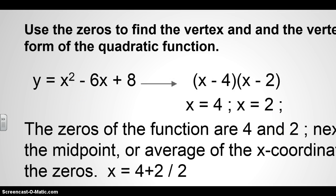So, here we have an example. They want us to use the zeros to find the vertex and the vertex form of the quadratic function. Remember the vertex form was on the previous slide, and that was in the form of y equals a parenthesis x minus h squared plus k. That is the vertex form here. Here we have a quadratic form, y equals x squared minus 6x plus 8. So, what we first have to do is we have to factor out this quadratic function. So, I factored it out here. So, we have x minus 4 and we have x minus 2.